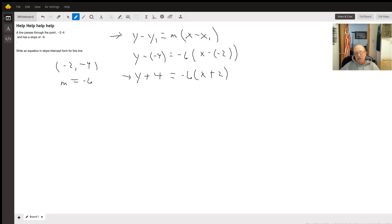Because y - (-4) is the same as plus 4, and minus a negative 2 is the same as plus 2. Then to get it in slope-intercept form, we want to solve that for y.